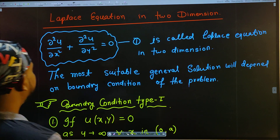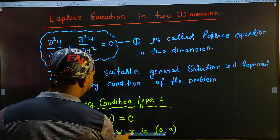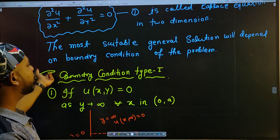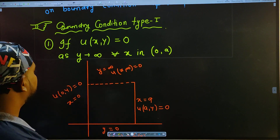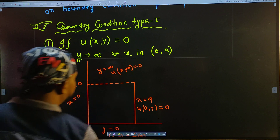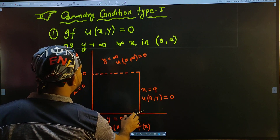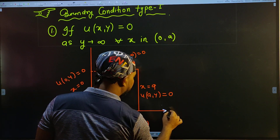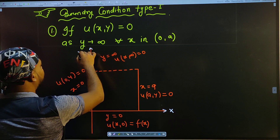The most suitable general solution will depend on the boundary condition of the problem. It depends on its boundary conditions — so note this. Now, boundary condition Type 1. Look carefully. In this, what are we doing? We take u(x, y) = 0 as y tends to infinity, for all x in (0, a). This is the x-axis and y-axis.